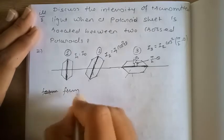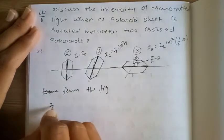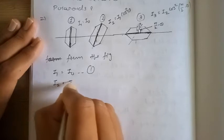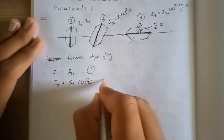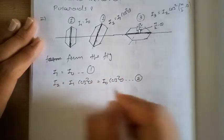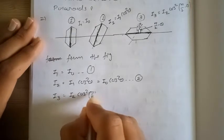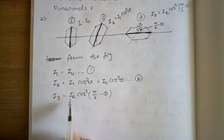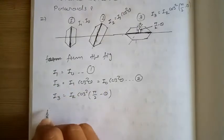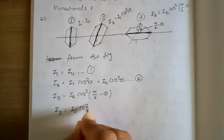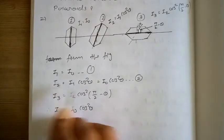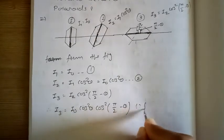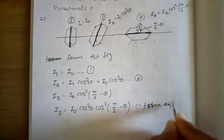From the figure: I1 = I0 (equation 1). I2 = I1·cos²θ = I0·cos²θ (equation 2). I3 = I2·cos²(π/2 - θ). Substituting the value of I2 from equation 2: I3 = I0·cos²θ · cos²(π/2 - θ).